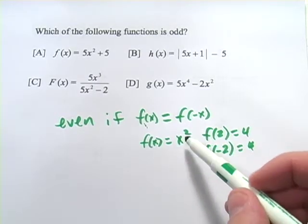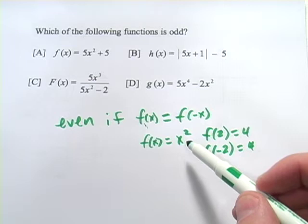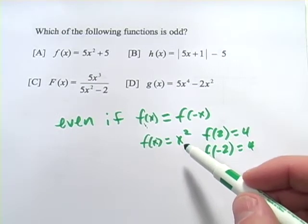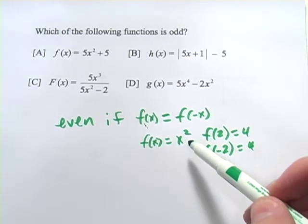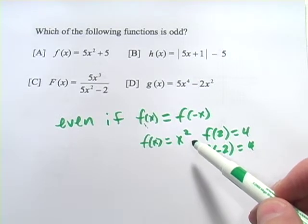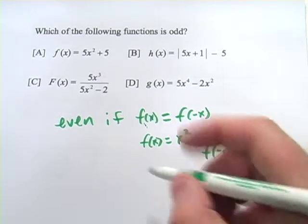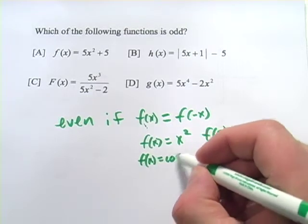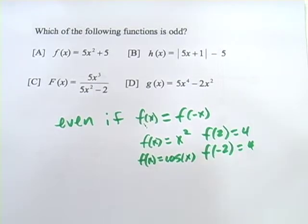f of x equals x squared is even. f of x equals x to the fourth is even. Any polynomial that only has even powers of x is going to be an even function. Another example would be f of x equals the cosine of x. That is an even function.